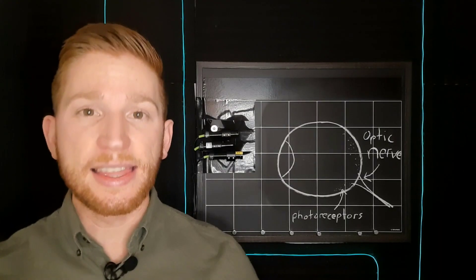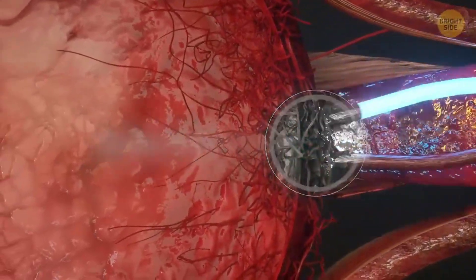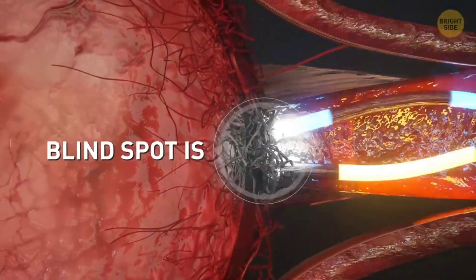Since there are no photoreceptors in those spots on your retina, light that would have been focused there just isn't detected, resulting in your blind spots.